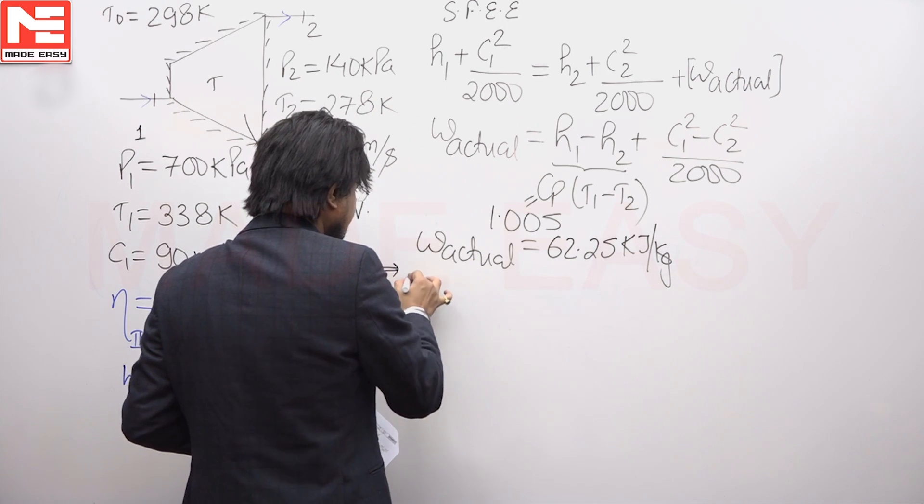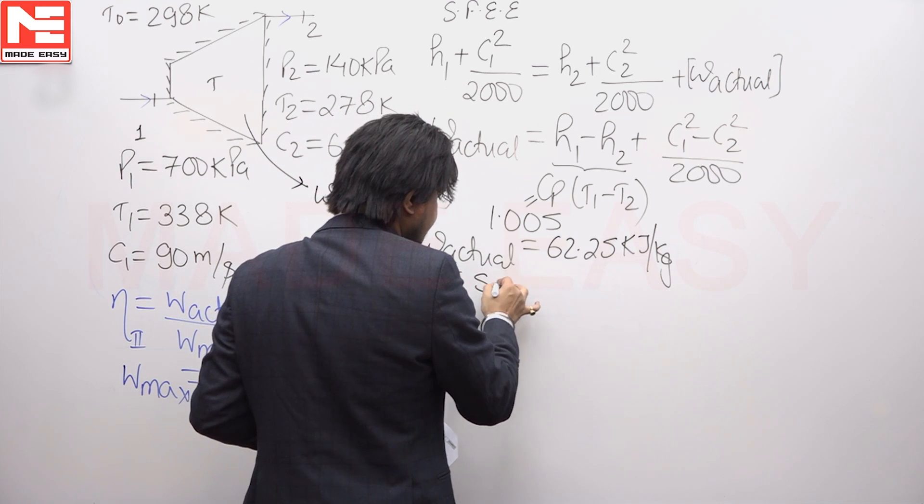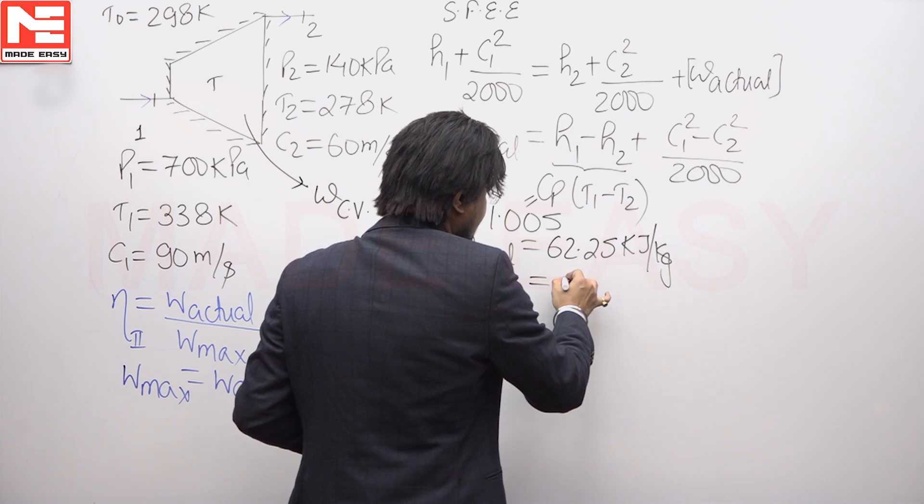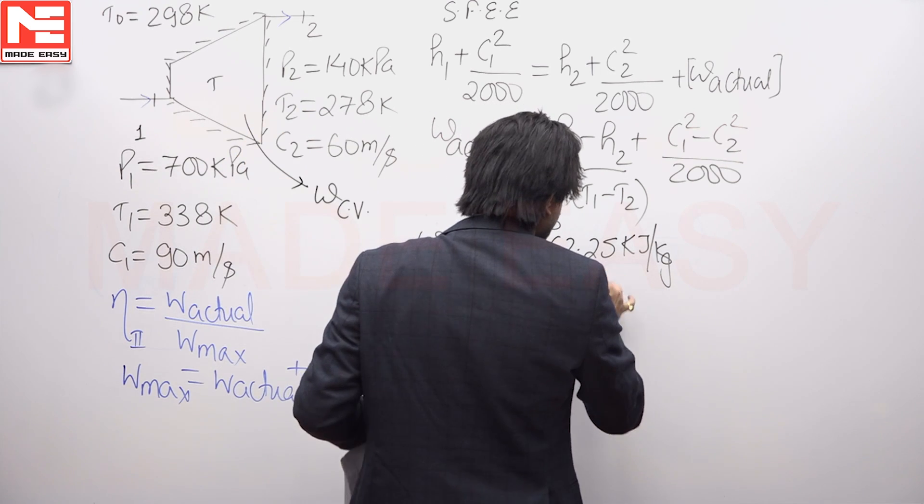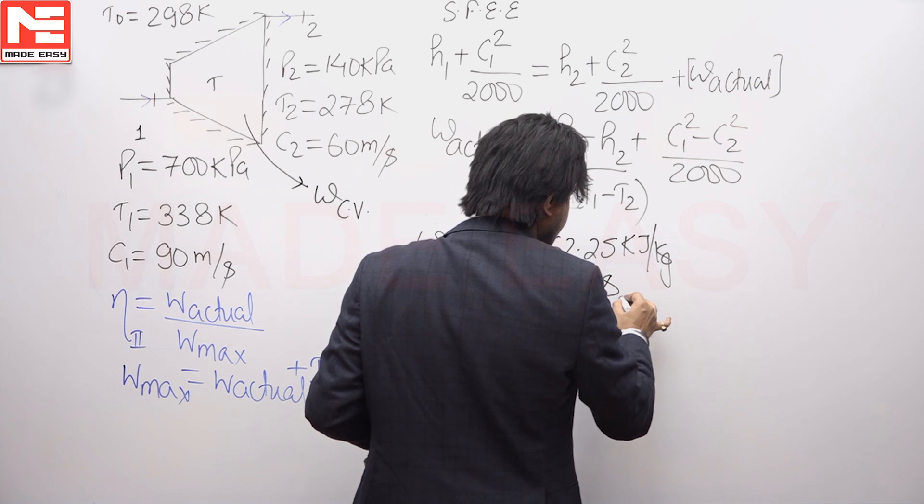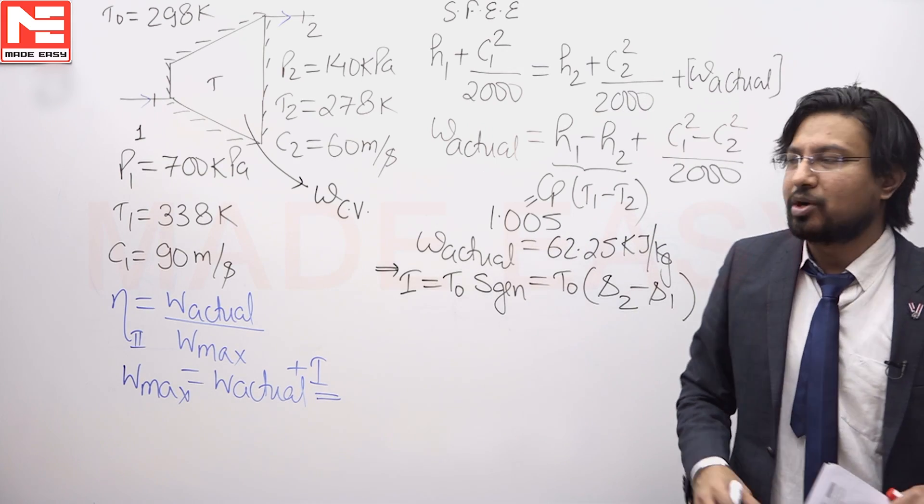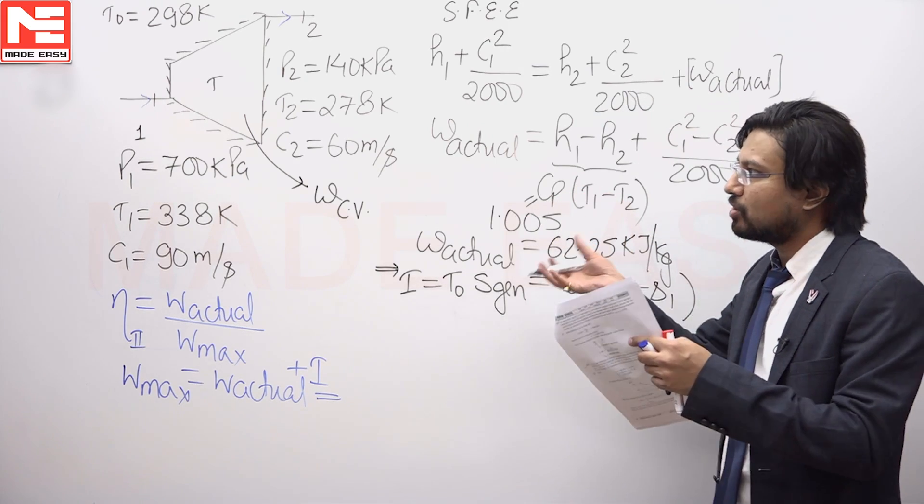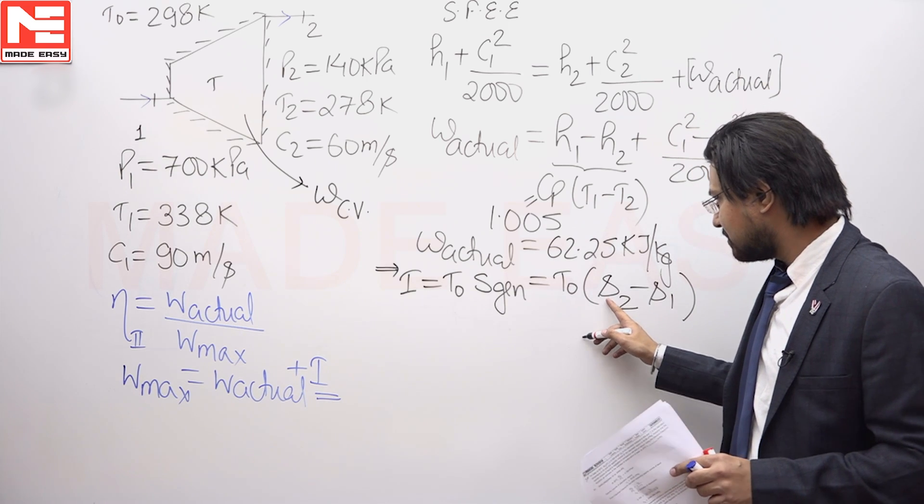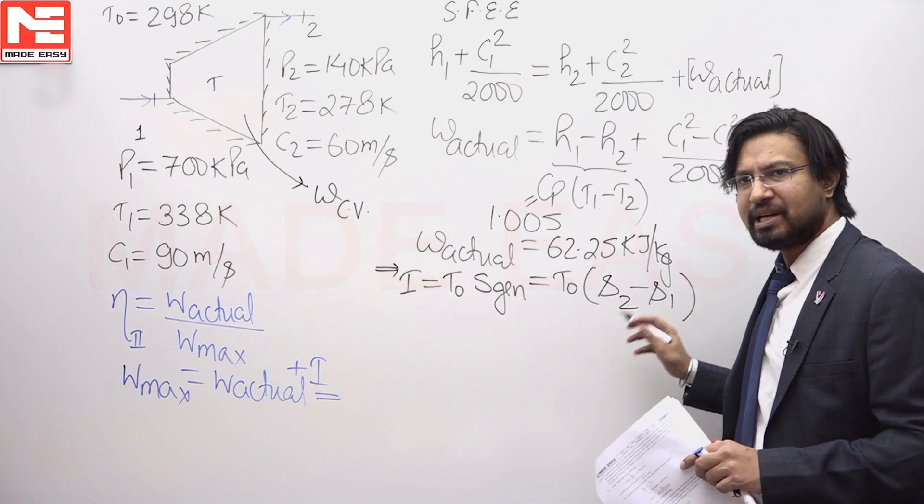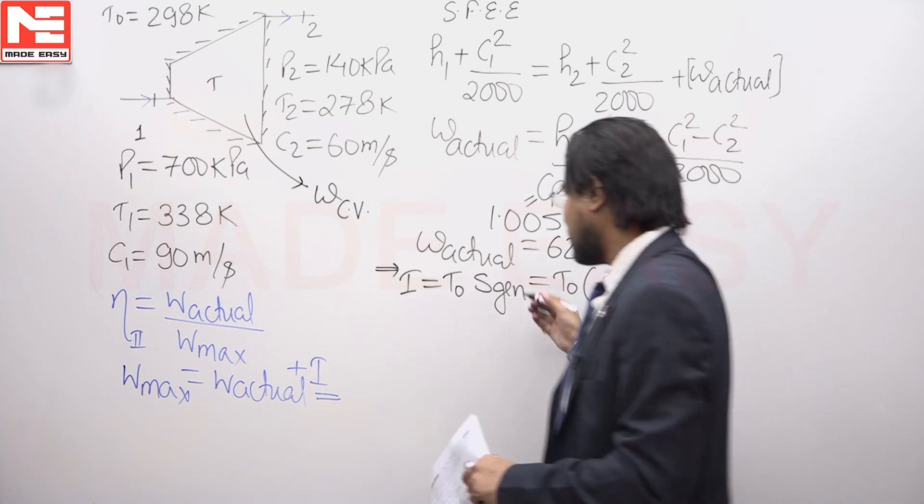The irreversibility is equal to T naught into entropy generation, and this will be T naught into the entropy generated equals the entropy which is exiting minus entropy which is entering. Because there is no heat transfer, entropy interaction will be only due to the mass. Entropy taken out by the mass minus entropy entering, the increase in entropy is because the entropy has been generated.